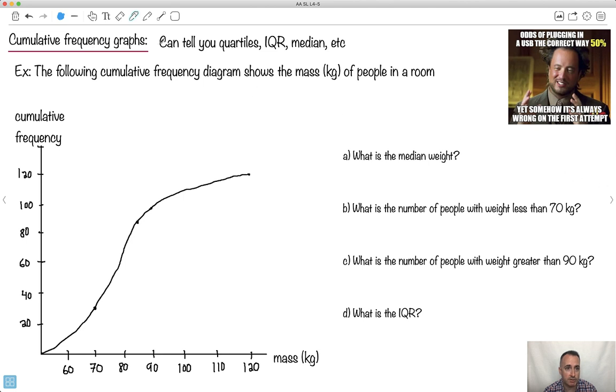So I'm going to show you this cumulative frequency graphs. But I like this with the USBs. It always seems like you plug them in the wrong way. So the following diagram this time will show the mass in kilograms of people in a room. I know it's supposed to be weight. I guess I should say weight, shouldn't I? I'll say weight. It's just because I'm a physicist and I don't like the word weight. It should really be mass. But we'll call it weight. So the weight of people in a room.